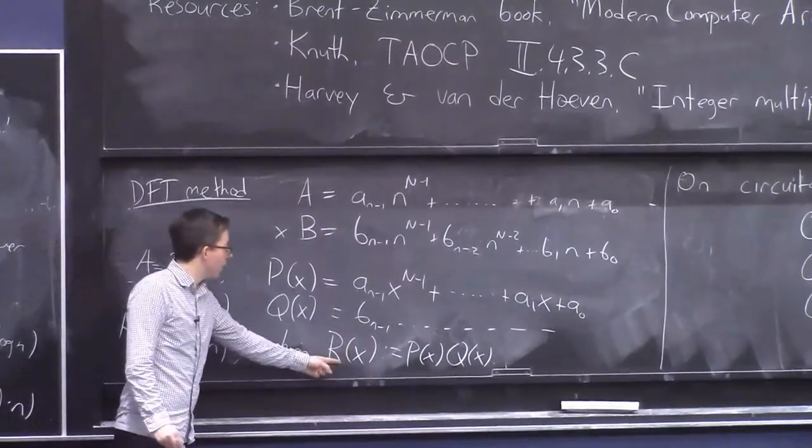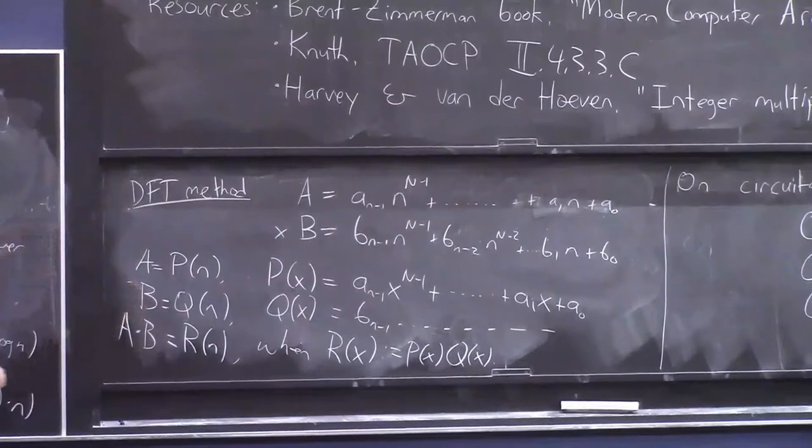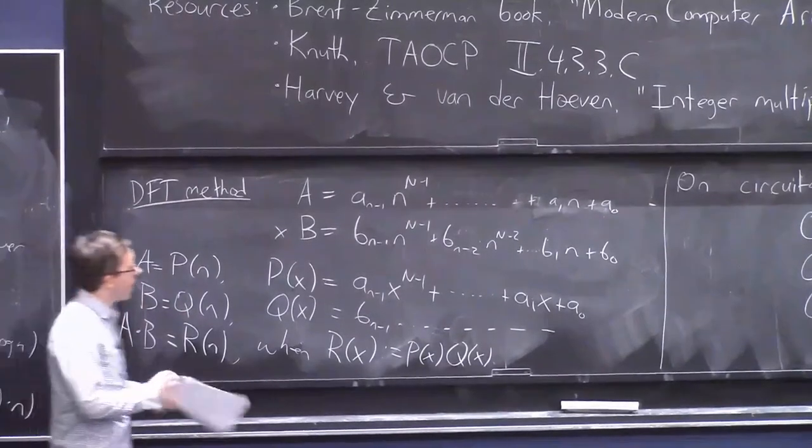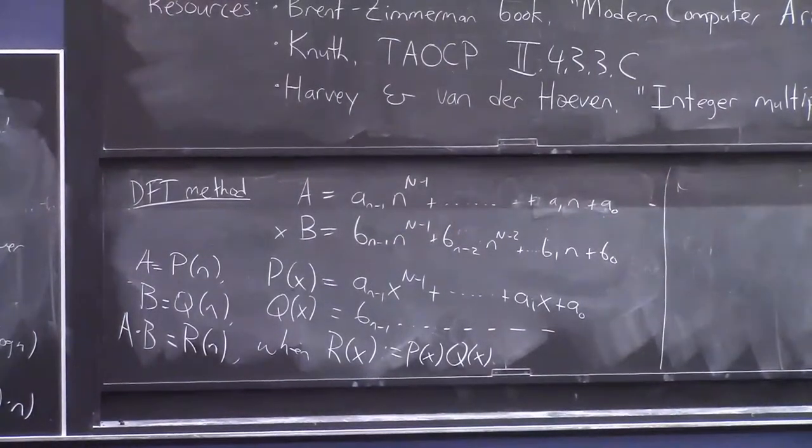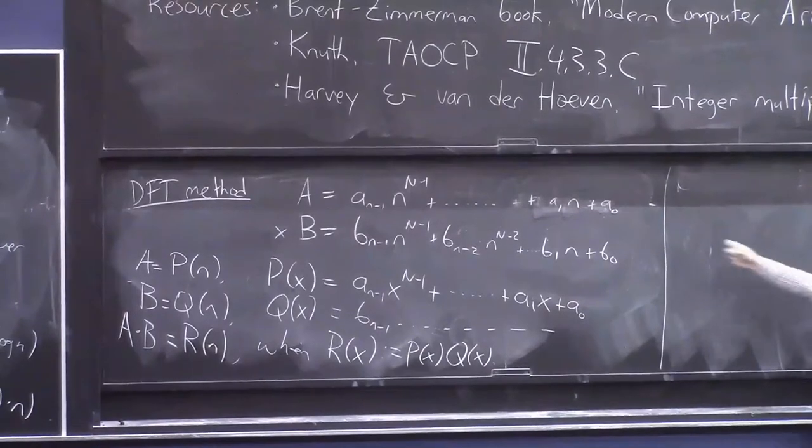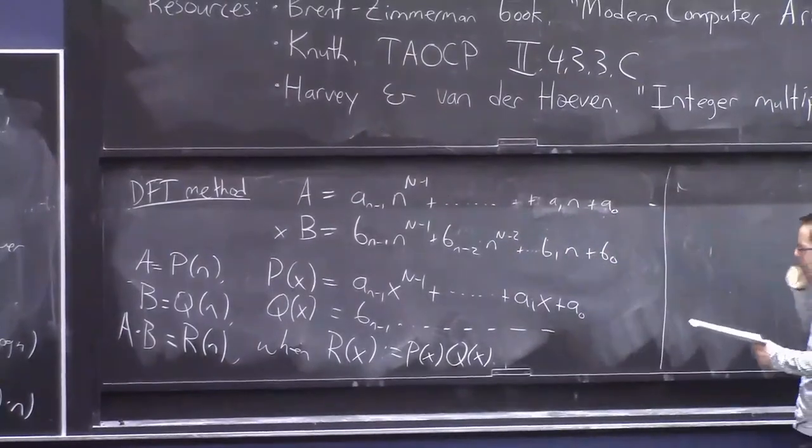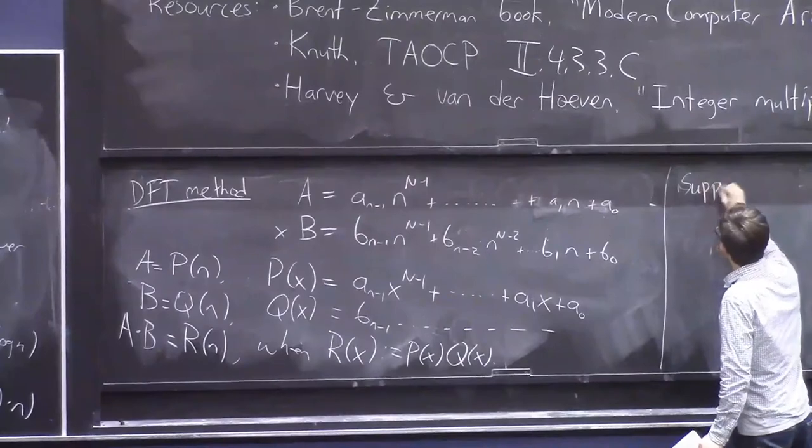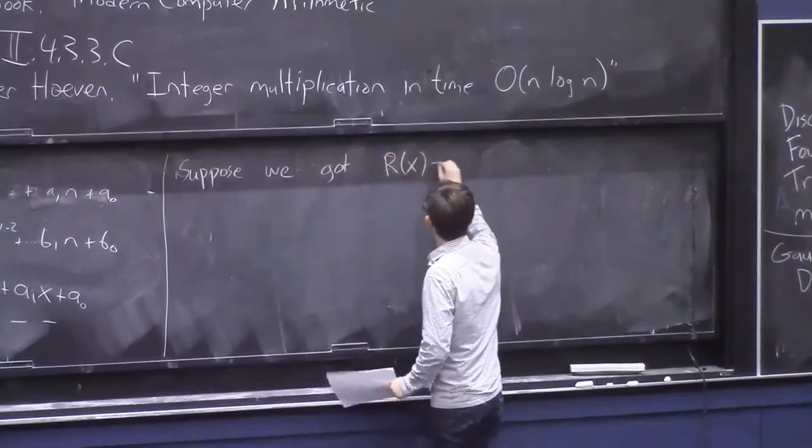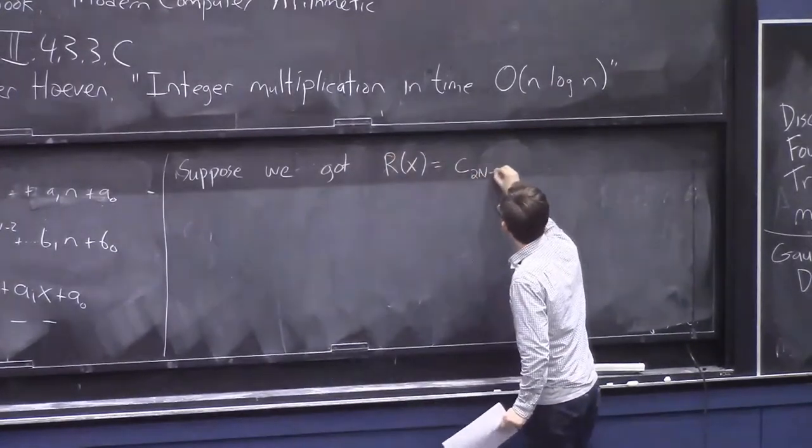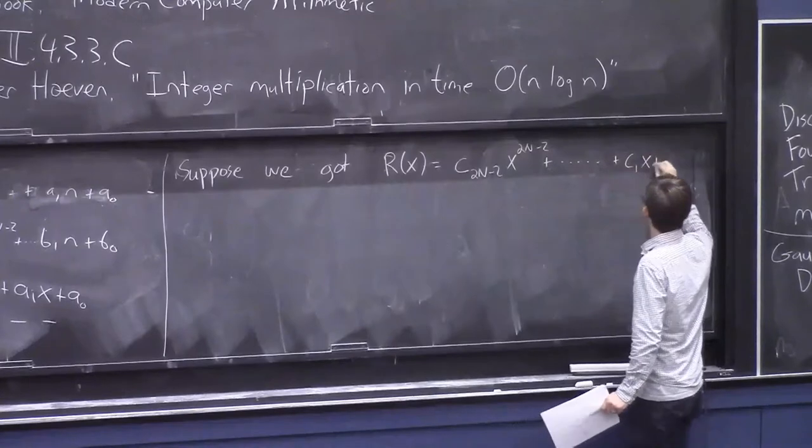And if we know what that polynomial is, if we now plug in the number little n for x, then we get P of n times Q of n, which is A times B. So what I'm saying here is, the input to the problem of multiplying two integers is, by the way, these digits, A_0 through A_n minus 1 and B_0 through B_n minus 1. And what we'd like to say is that, suppose given that input, we came up with the polynomial R of x,